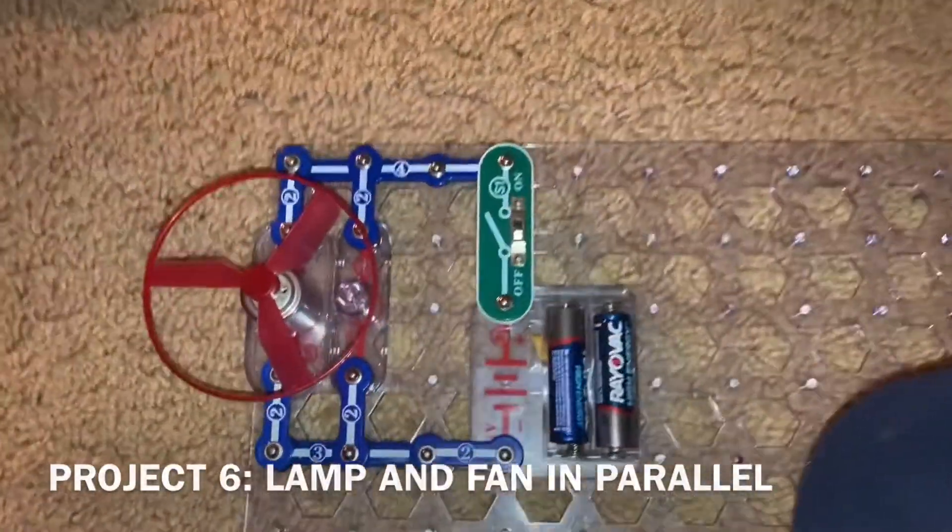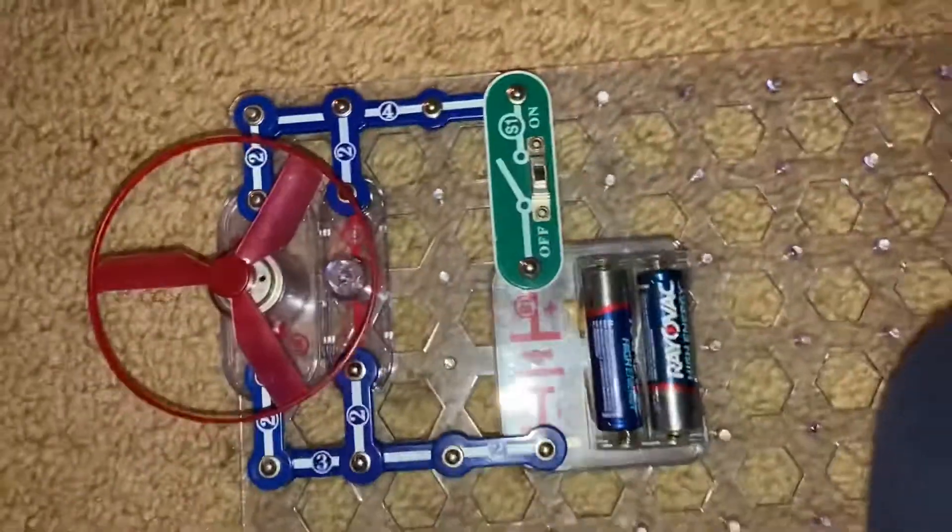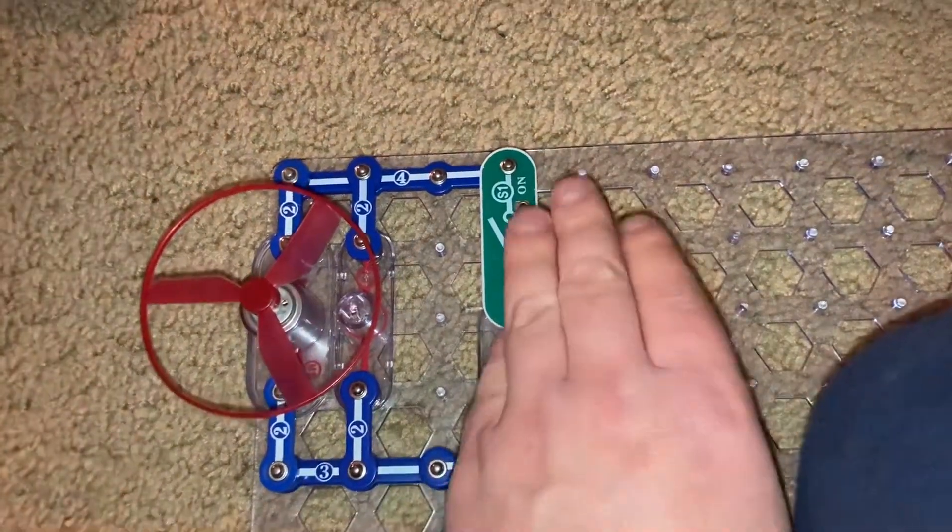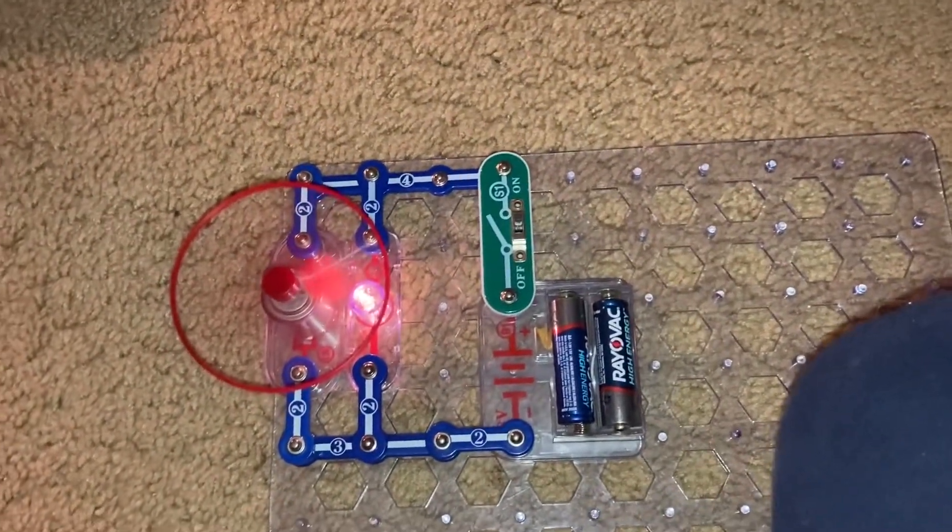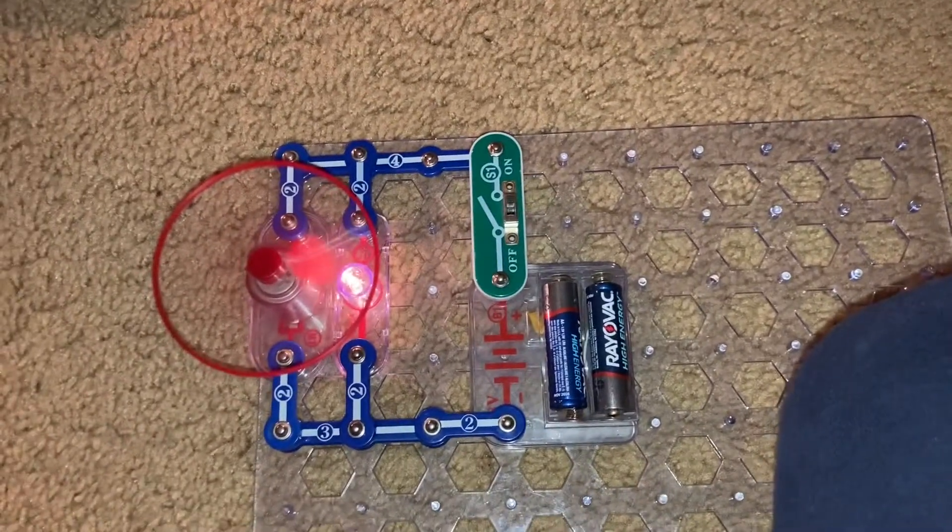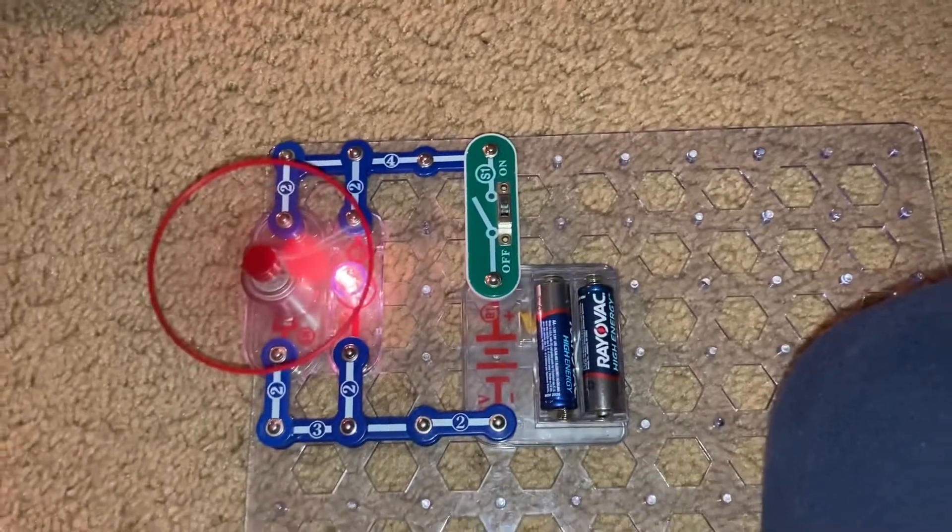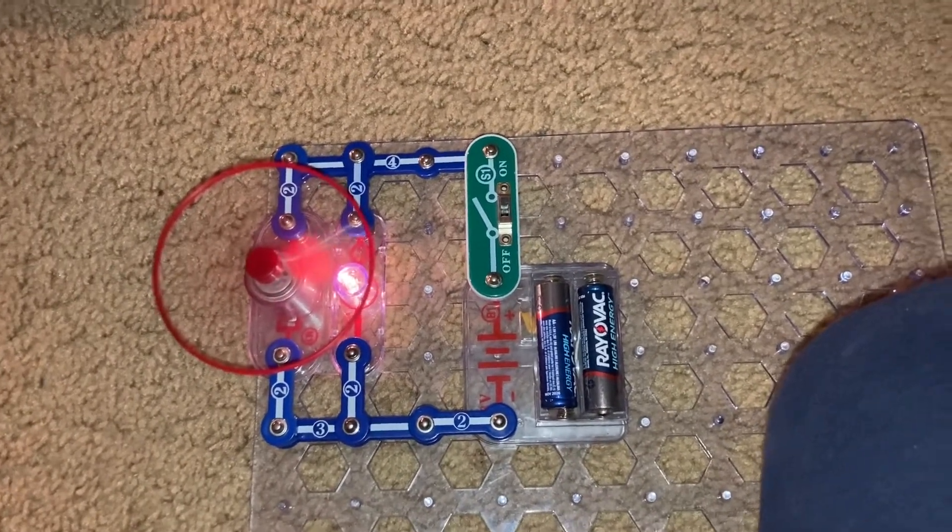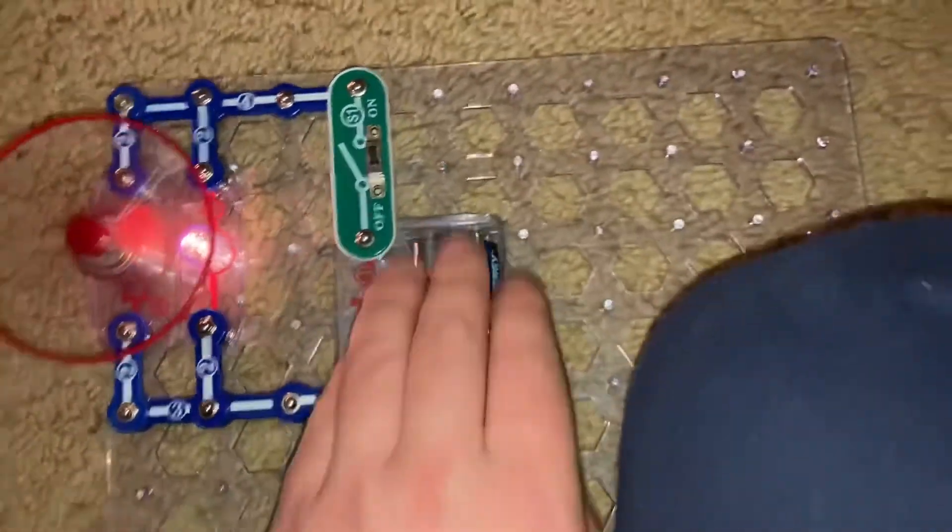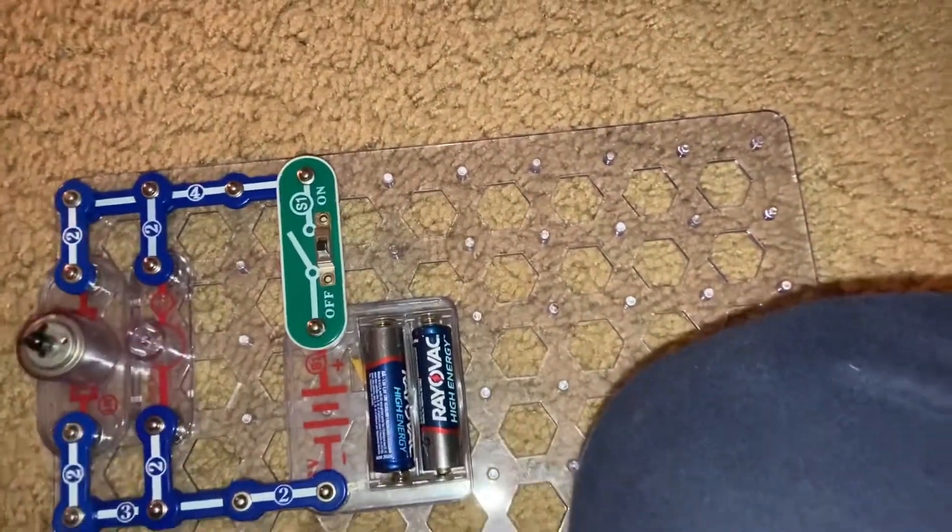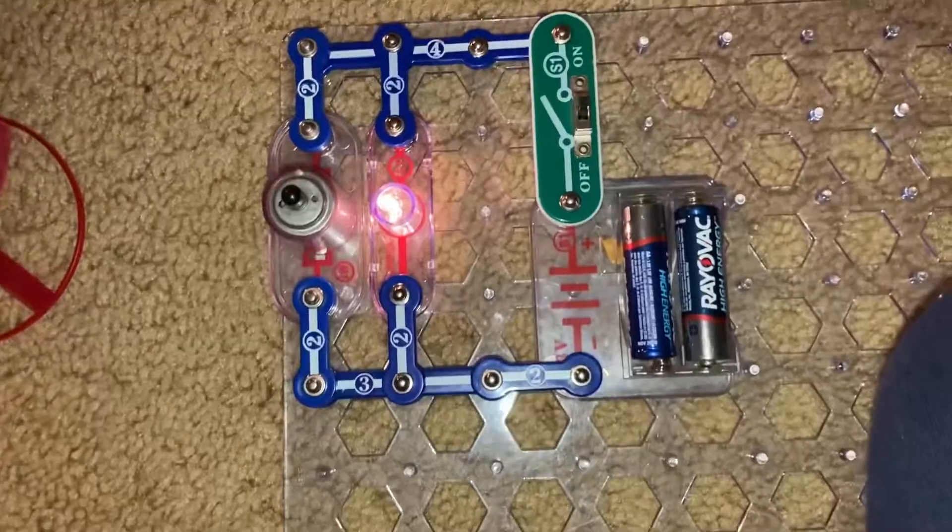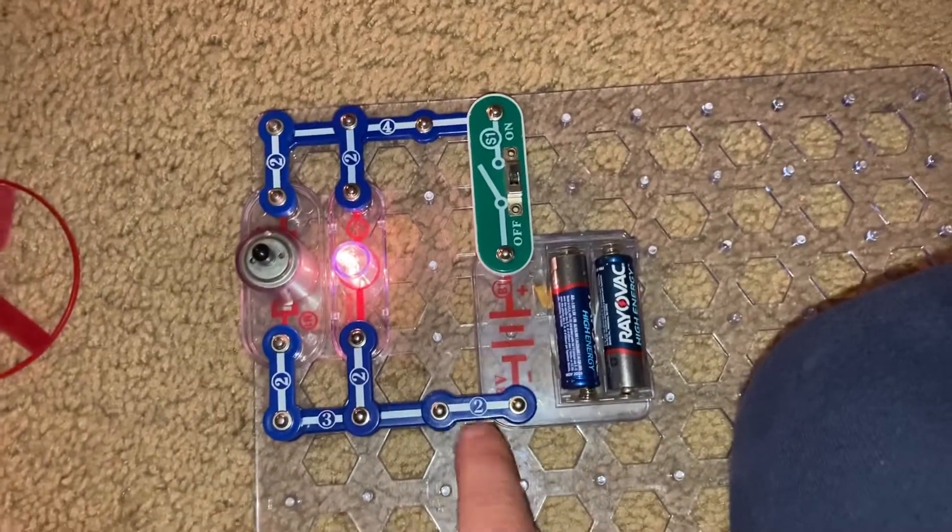Project six is lamp and fan in parallel. Now, both of these components have their own pathway for current to flow through. So when I turn on the switch, the fan and lamp are now at full power because they each have their own pathway to receive the full voltage from the batteries. The batteries are generating a combined three volts. Now, I can remove the fan from the motor, that won't interfere with the performance of the lamp because it still is receiving its own current.